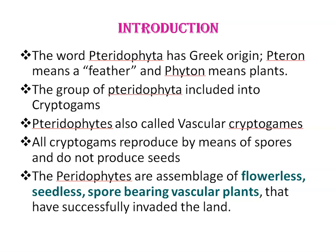Algae, fungi and bryophytes are called lower cryptogames, while Pteridophytes are called higher cryptogames. Pteridophytes are also called vascular cryptogames because only Pteridophytes have a well-developed conducting system among cryptogames. Due to this reason, they are the first true land plants. All cryptogames reproduce by means of spores and do not produce seeds. Pteridophytes are assemblies of flowerless, seedless, spore-bearing vascular plants that have successfully invaded the land.